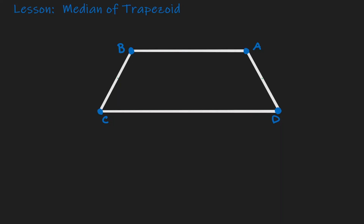Welcome. Today we'll be defining the median of a trapezoid. Remember that there are two bases in a trapezoid, and what's special about those bases is that they are parallel to each other. We also have two legs, and those legs don't necessarily have to be parallel to each other.